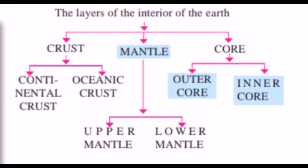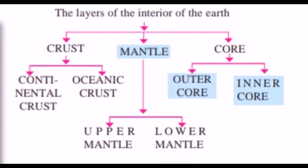At the start of this video, I had told you that we would look at the diagram. In this diagram, you can see the three layers of the earth: the crust, the mantle, and the core. The crust is divided into continental crust and oceanic crust. The mantle is divided into upper mantle and lower mantle. And the core is divided into outer core and inner core. So in this video, we learnt about the layers of the interior of the earth.